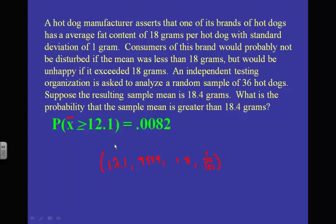I realize the slide showed 12.1 — that should have been 18.4. What's the probability the sample mean is greater than 18.4? That's a typo on my part. If you do normCDF with those values, you should get 0.0082.